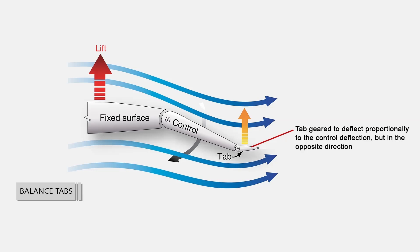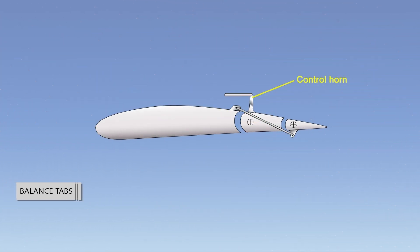Balance tabs are usually linked directly to the control surface linkage so that they move automatically when there is an input for control surface movement. They also can double as trim tabs if adjustable in the flight deck.